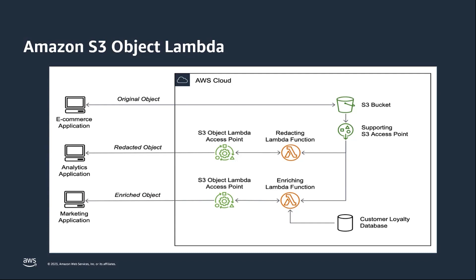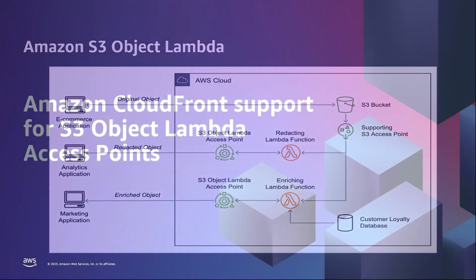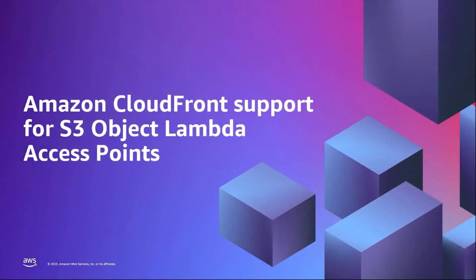So, depending on who is really accessing the data, a different variant of that object is needed. As you can see in the image, this can be easily achieved using different S3 Object Lambda functions. One really common use case that we've heard from customers is using S3 Object Lambda to perform all sorts of transformations on images. In many of these cases, customers want to use S3 Object Lambda and already use Amazon CloudFront as a caching layer.